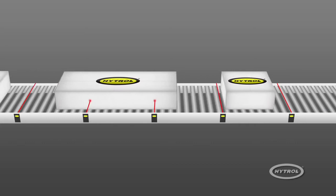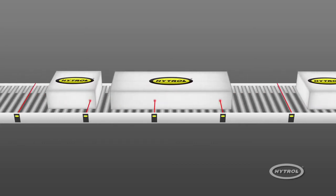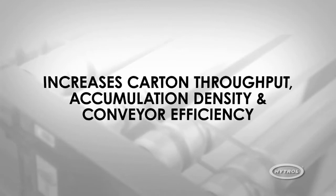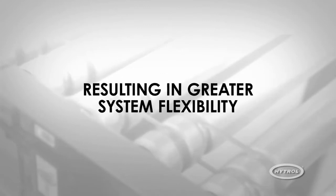By simply assigning longer zone lengths when needed, dynamic zone allocation increases carton throughput, accumulation density, and conveyor efficiency, resulting in greater system flexibility.